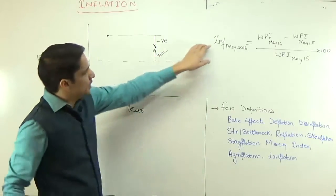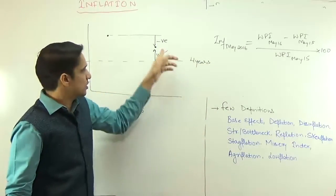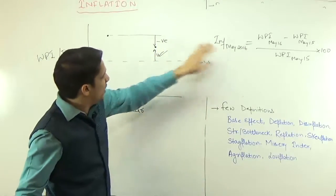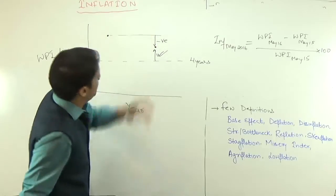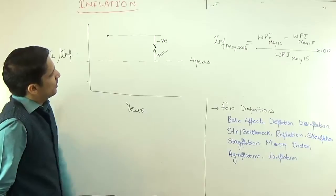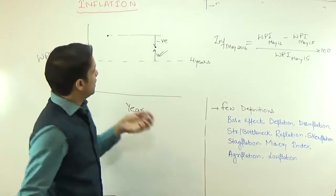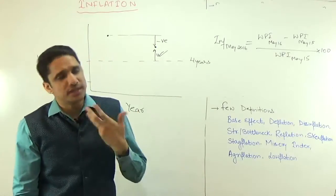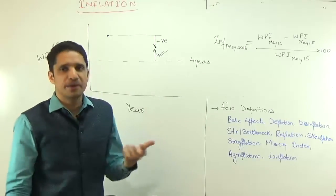So it can happen that in the market, prices are very high because actual inflation is very high. But the method we adopt to calculate inflation — comparing with last year's WPI value — gives a negative inflation figure. So theoretically inflation is negative, but in the market the prices of commodities are very high. That is known as the base effect.